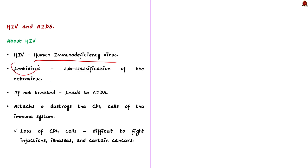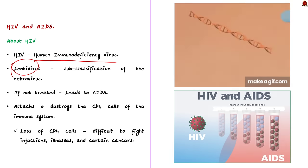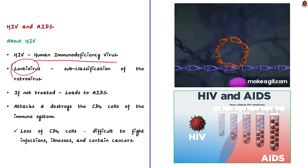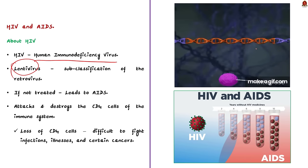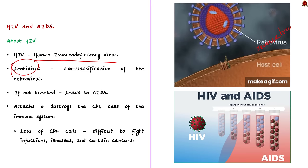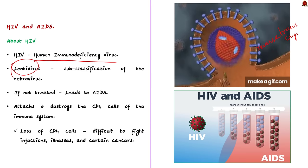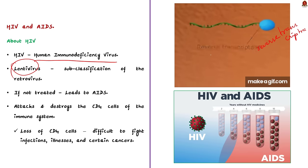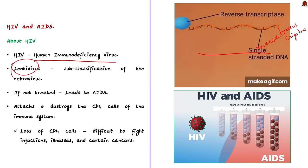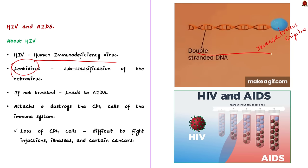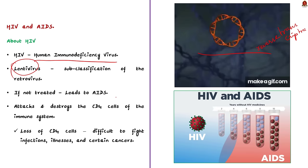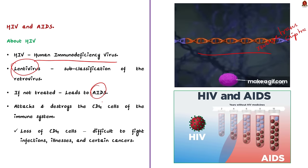HIV is a lentivirus, which is a subclassification of the retrovirus. These retroviruses are a type of virus that use a special enzyme called reverse transcriptase to translate their genetic information into DNA. That DNA can then integrate into the host cell's DNA, thereby changing the entire genome of the cell. If this HIV is left untreated, it can lead to acquired immunodeficiency syndrome, or AIDS.